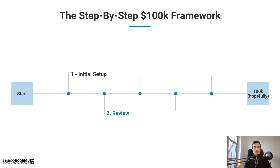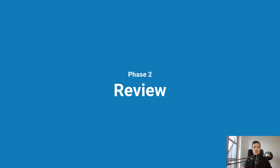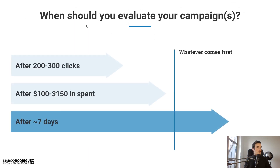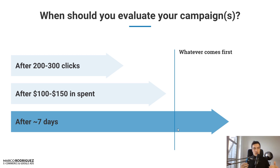The second step is review. There are multiple ways to start this process — it should be an ongoing thing, but to be more specific: when should you evaluate your campaigns? Three rules of thumb: after 200 to 300 clicks, or after $100 to $150 net spend, or after roughly seven days — whichever comes first. If something is really standing out, like a CPC of $3, of course intervene earlier. But if things are going somewhat smoothly — CPC is okay, CTR is around 1% for shopping — keep it running.